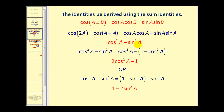Taking cosine squared A minus sine squared A, we can replace sine squared A with one minus cosine squared A and obtain two cosine squared A minus one. Or if we replace cosine squared A with one minus sine squared A, we obtain one minus two sine squared A. You may want to pause the video and take a closer look at this.